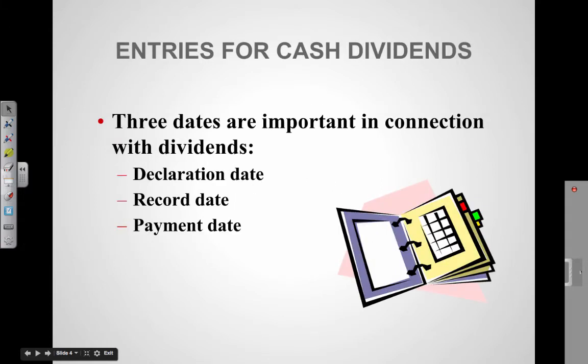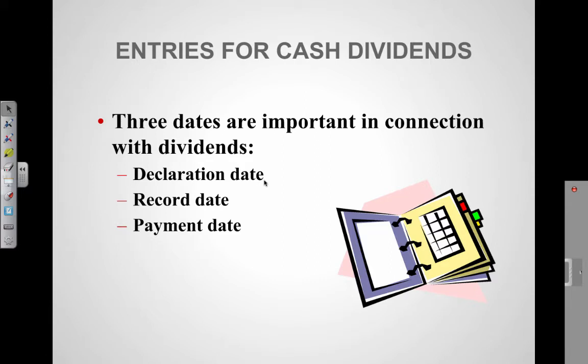With respect to the journal entries for cash dividends, there are three dates that are very important. There's a declaration date — that's the day that the board of directors makes the declaration. It's during the meeting when they say they'd like to declare a dividend for this company. And then approximately two weeks later, there's a record date.